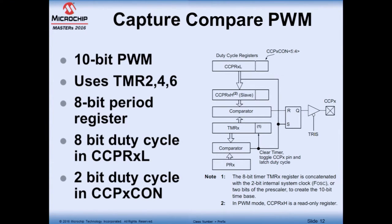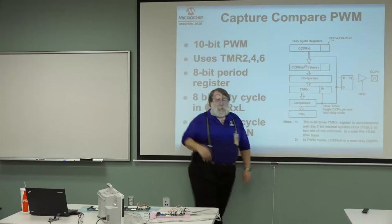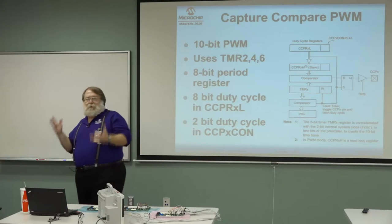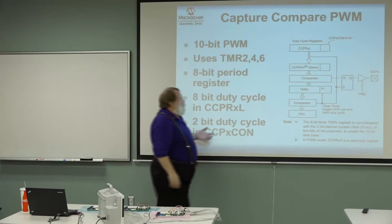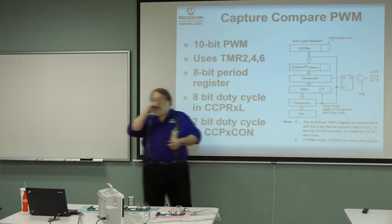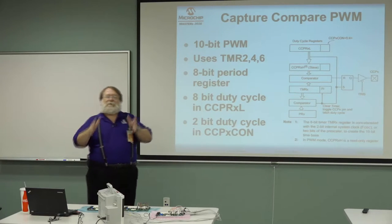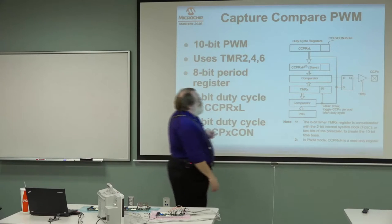For DC-to-DC conversion, we need a PWM source. Starting with the easier discontinuous path, we use a digital PWM — specifically the 10-bit Capture/Compare/PWM (CCP) module. It uses a PR period register (8-bit) and a CCPRxL register plus two bits from the control register for the full 10-bit comparison. The module can take its clock from the internal oscillator or an external time base. Check the data sheet for specific options on your part.